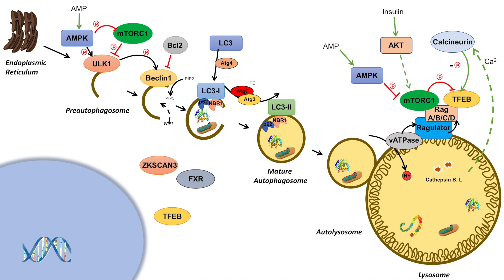The phosphorylation of TFEB is removed during fasting, allowing TFEB to enter the nucleus, where it binds to particular genes with a CLEAR sequence in their promoter region. There are a large collection of genes with this CLEAR sequence, all part of a larger gene network known as the CLEAR network. Some of these genes include ULK1, Beclin-1, P62, and LC3.